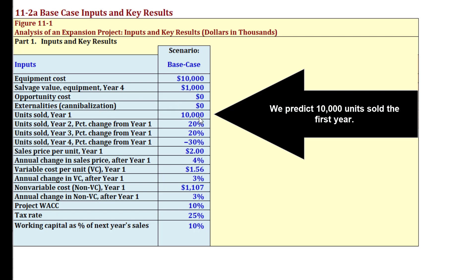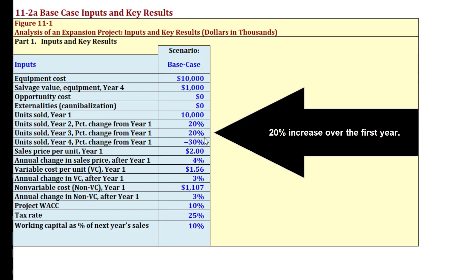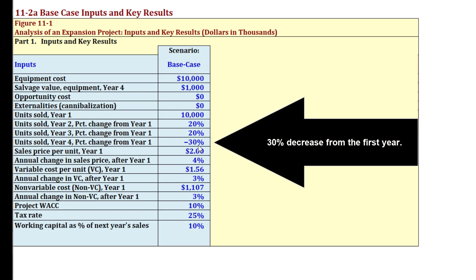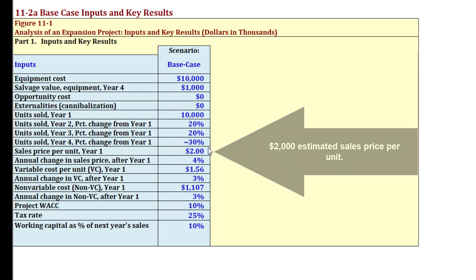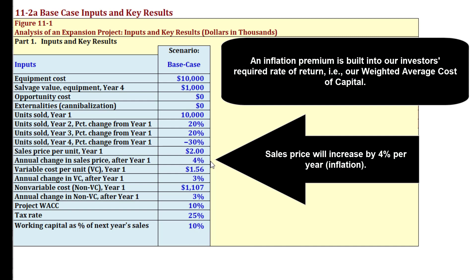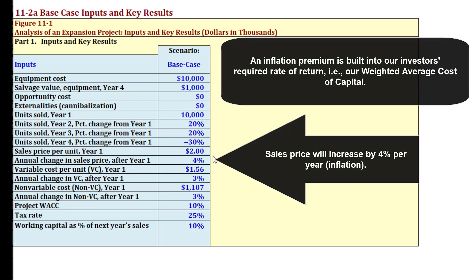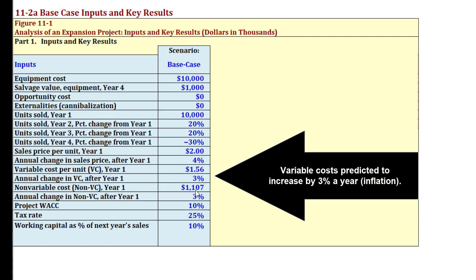We predict we're going to sell 10,000 units in the first year, 20% more in the second year, 20% more again in the third year, and then when our license runs out, sales drop by 30% in year four. Our sales price per unit is $2,000 and we expect it to go up by 4% per year. Since inflation is built into our cost of capital, we include inflation in projected cash flows. Variable cost per unit is $1,560 and we expect that to go up 3% per year.